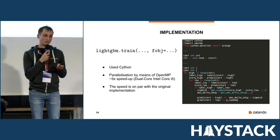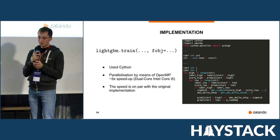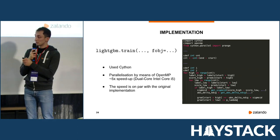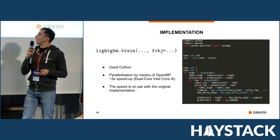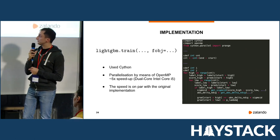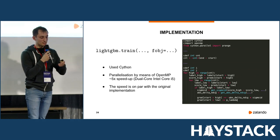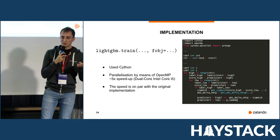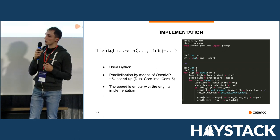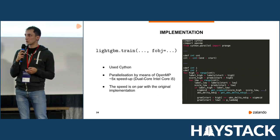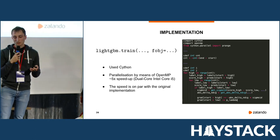In our experiments, we implemented this using LightGBM. LightGBM allows passing a custom objective function for computing the lambda gradient to the training procedure. We implemented this combined objective using Cython. Also, since lambda gradients can be computed separately for each result set, it's straightforward to parallelize the computation — we did that using OpenMP, which gave a big increase in speed. After this parallelization, the speed was roughly the same as that of the original LightGBM implementation.